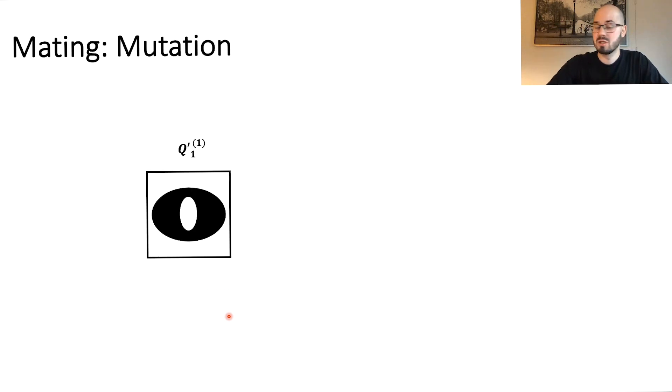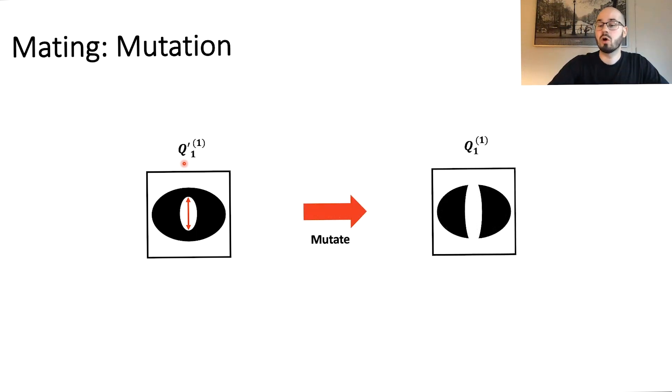The mutation takes a property of this current solution and simply changes it. So let's say we take the inner white ellipse and we make this a taller ellipse to have more white space in here. So we take a property, we change it and then we have finally our first offspring solution q1 which is part of the mating process.